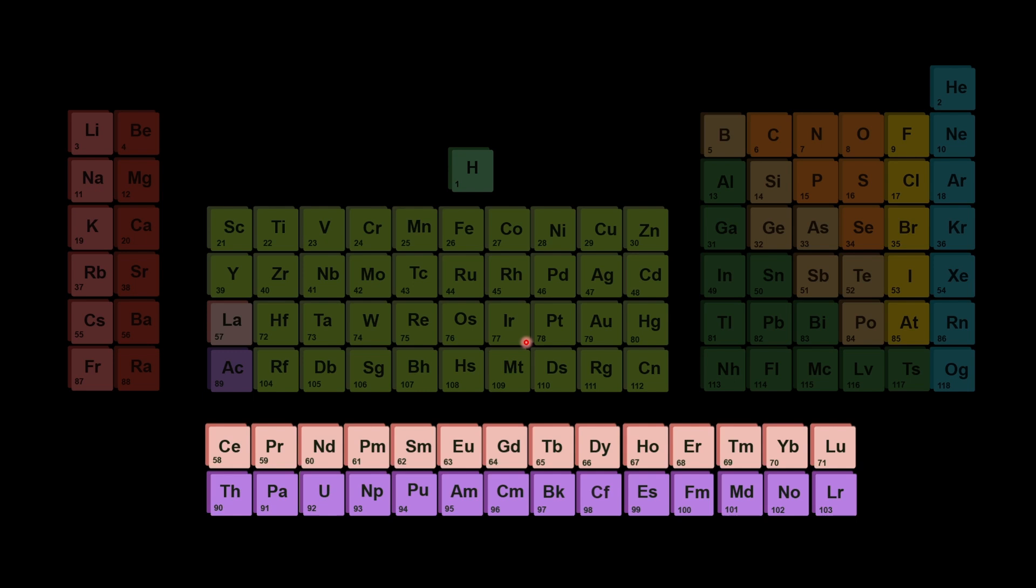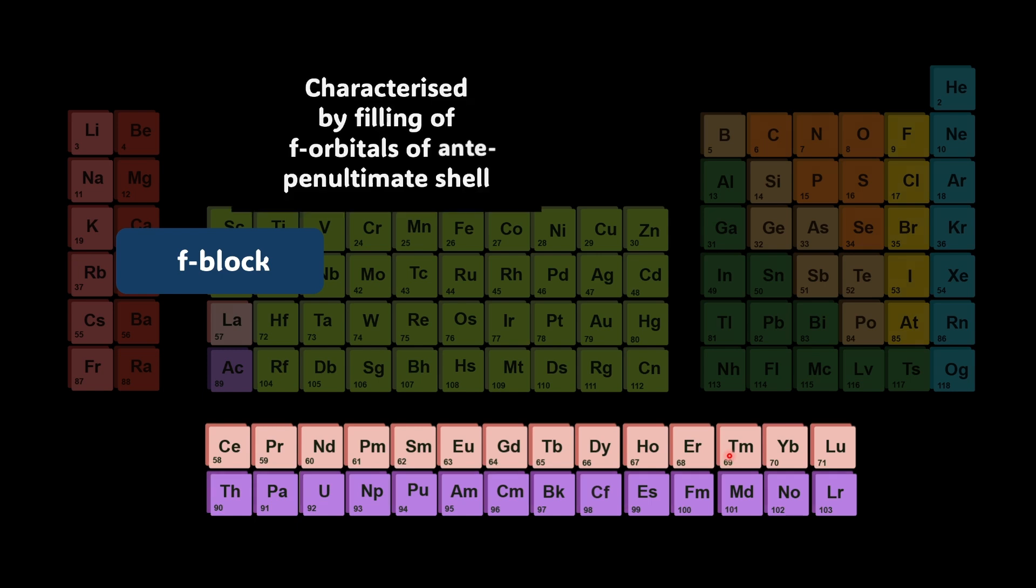Now let's move on to F block. Why is F block separately placed? We don't want unnecessary expansion of the periodic table. To avoid undue expansion we keep F block a little separately. Within each series the properties of elements are quite similar. Like all other blocks, F block is characterized by filling of the f orbitals of anti-penultimate shell. What are we referring to? What is this anti-penultimate shell?